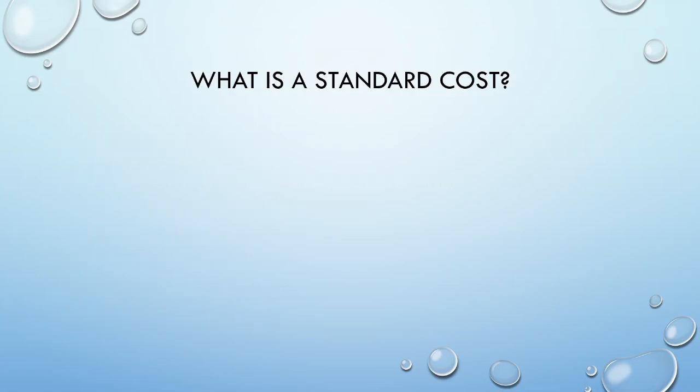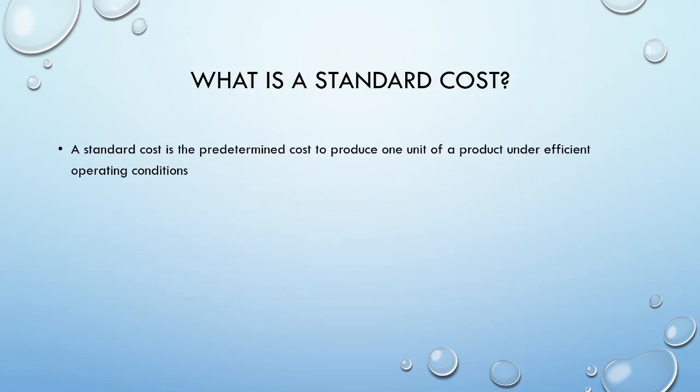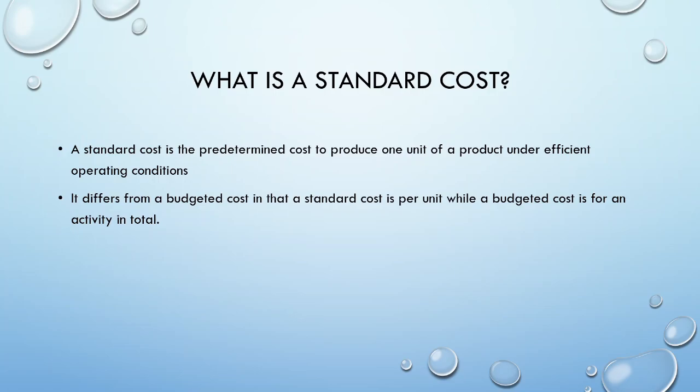A standard cost is simply a predetermined cost to produce one unit of a product under efficient operating conditions. It is important to understand how a standard cost differs from a budgeted cost. A standard cost is a predetermined cost per unit, while a budgeted cost is the expected cost for the activity, operation, or process in total. Let's look at a small example to see how these two differ and how they relate to one another.